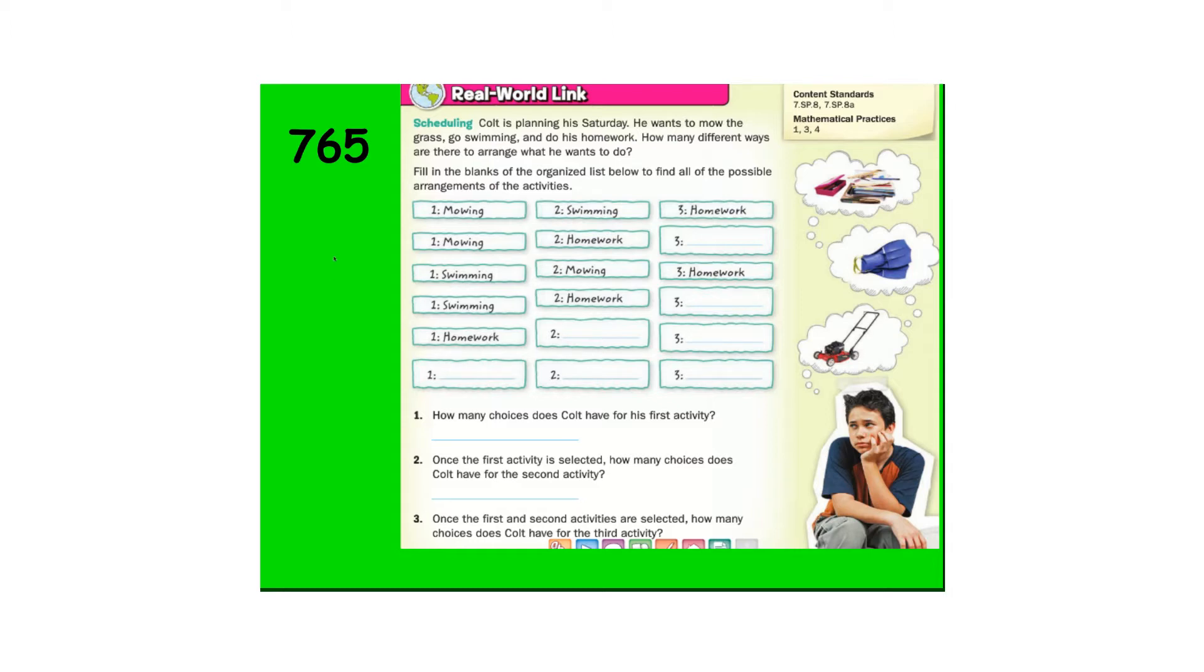So he could mow, then swim, then homework. He could mow, then homework, then swim. Swim, mow, homework. Swim, homework, mow. Homework, swim, mow. Homework, mow, swim. So how many choices? 1, 2, 3, 4, 5, 6.